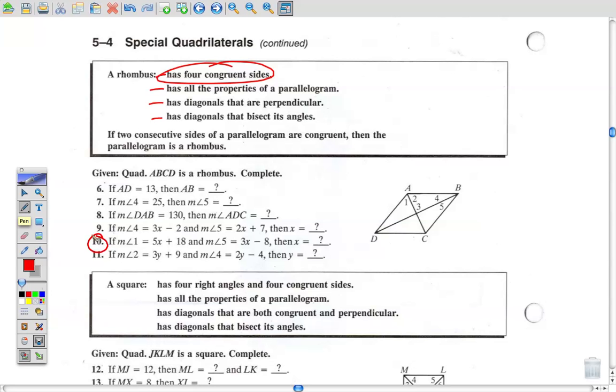Let's go down to number 10. Now number 10, it says if angle 1 is 5x, so we're talking about angle 1 there, and that's 5x plus 18, and angle 5, this angle, is 3x minus 8. It wants you to figure out what x is. All right, now what you can do here is, it's a rhombus, right? The diagonals are bisected. So I know that angle 5 and angle 4 are the same. I know angle 1 and angle 2 are the same. Now, how can I use that fact to figure this out? Let's see, what else do I know about a rhombus? The diagonals are perpendicular. So I know that this angle right there is 90 degrees.